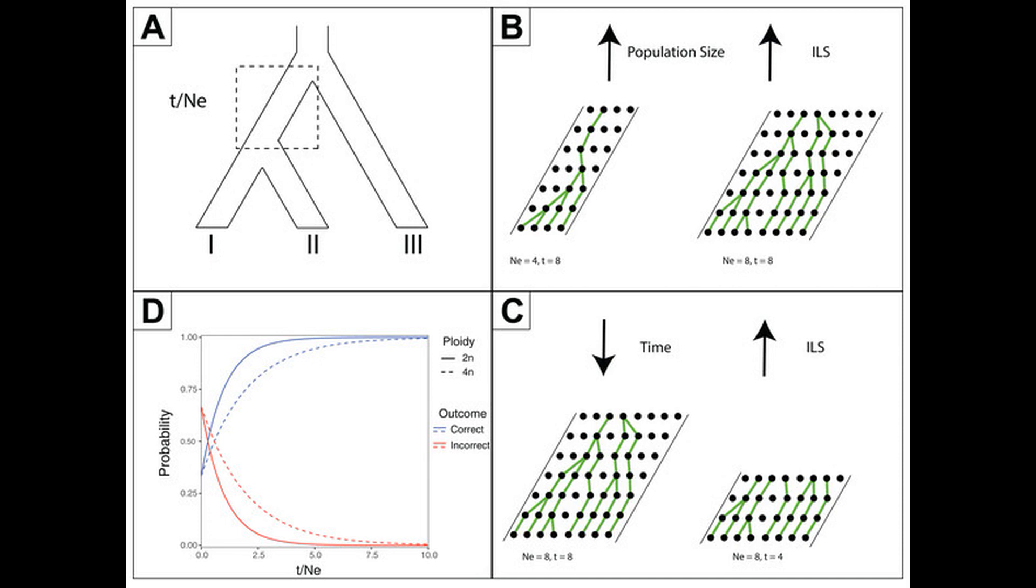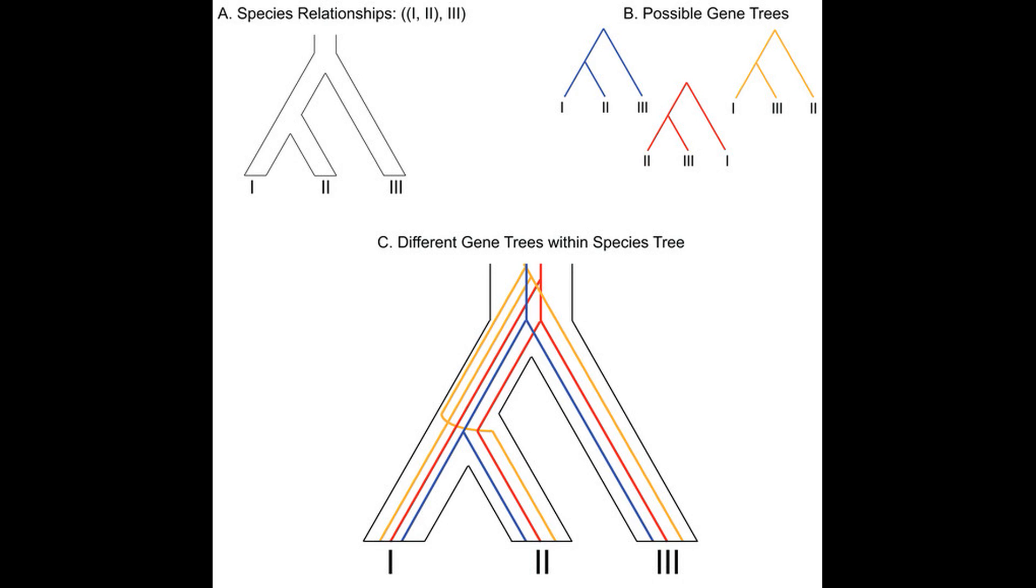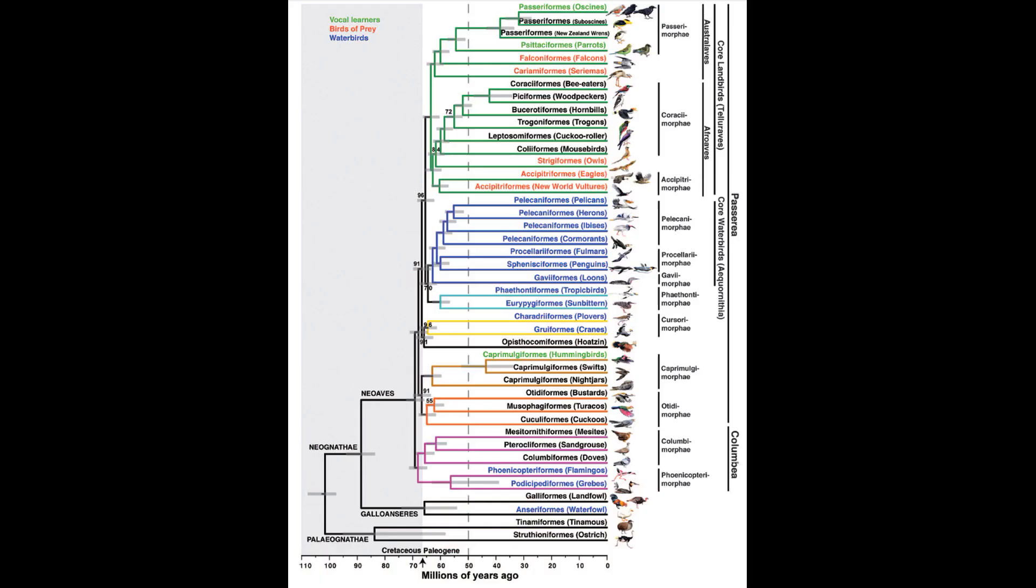Furthermore, while ILS is often discussed regarding the relationships between closely related species, it also applies to ancient lineages that have diverged from each other a long time ago, especially those that have diverged from each other within a short time frame, and thus with shorter branches. A good example of this is seen in birds, particularly the clade Neoaves.